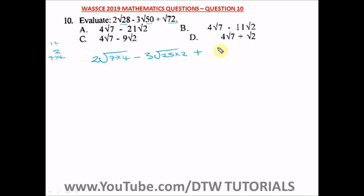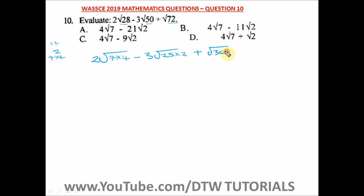For √72, dividing 72 by two gives 36, and 36 is also a perfect square because six times six is 36. So we have √72 = √(36 × 2), which gives us 6√2.